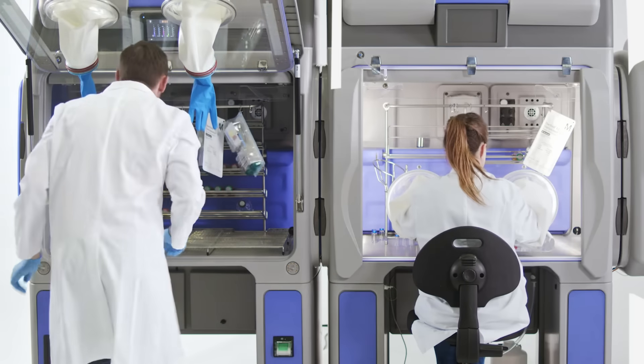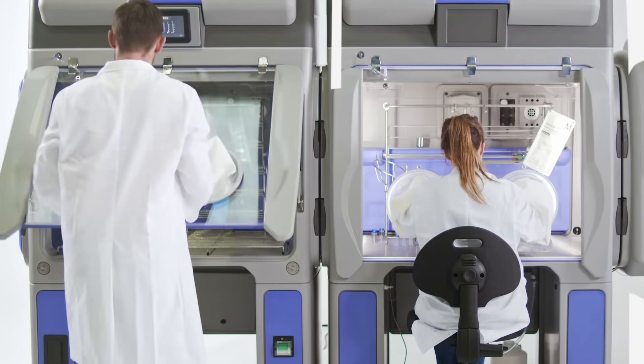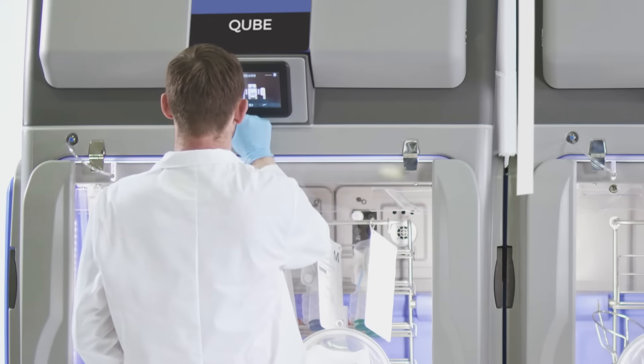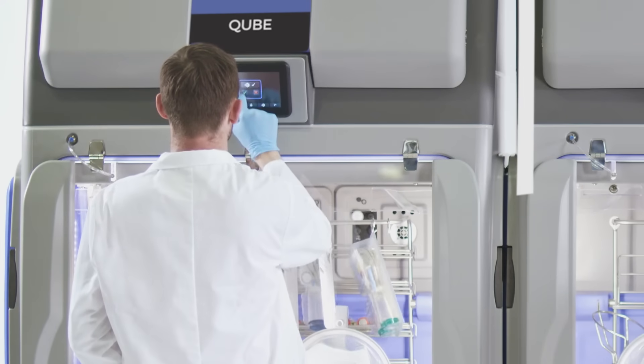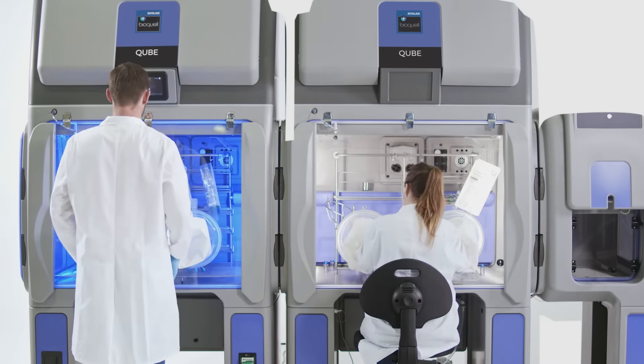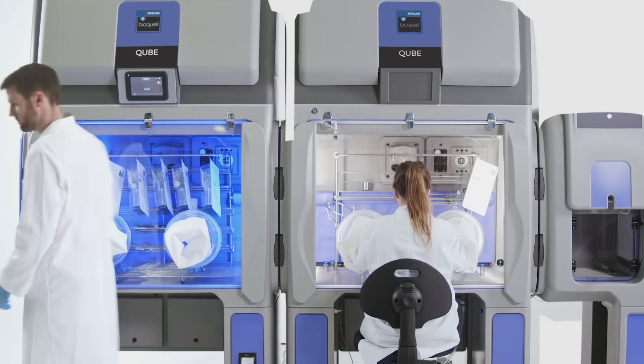Place your testing supplies on the racking in the vaporizer's chamber. When a cycle is started in the chamber with the supplies, exposed surfaces receive a validated six-log sporocidal kill in as little as 20 minutes.